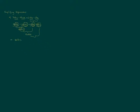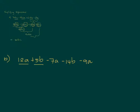Let's look at the next one: 12a plus 5b minus 7a minus 14b minus 9a. Algebra is about combining similar terms — 'similar' means the same letters. You can never combine 12a and 5b because a and b are not the same. But if you look at the other terms, you have 7a and 9a to combine with 12a.